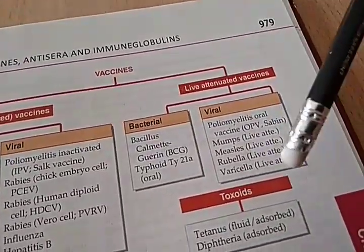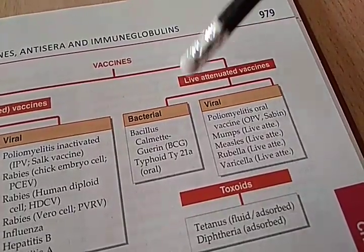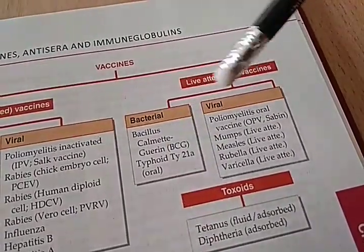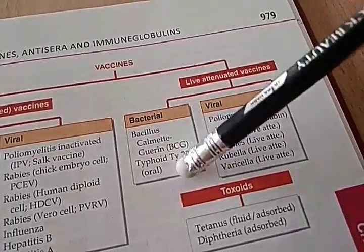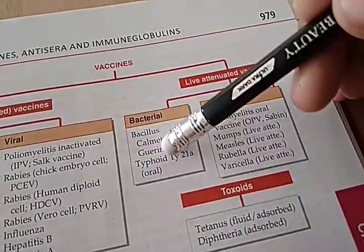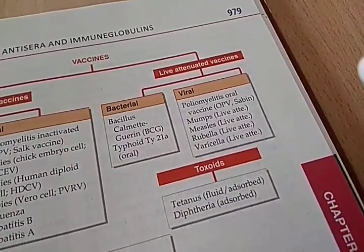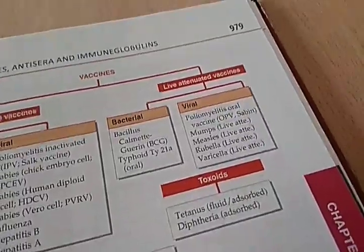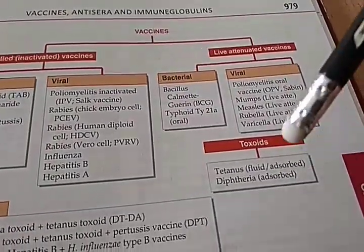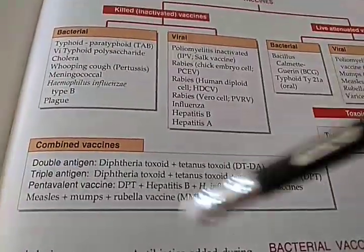Measles and all will be live attenuated — measles, mumps, rubella, varicella, polio (oral polio). All these are live attenuated vaccines. For bacterial live attenuated: typhoid — they give you live attenuated bacteria. BCG is also live attenuated. Then toxoids — they don't have any organism at all, neither killed nor live. Diphtheria and tetanus are toxoids.